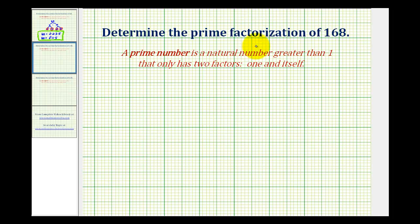In this example, we want to determine the prime factorization of 168, which means we want to determine the prime numbers that have a product of 168. A prime number is a natural number greater than one that has only two factors, one and itself.